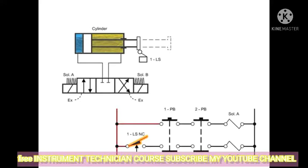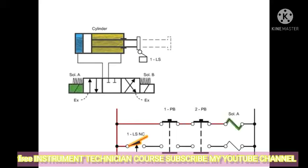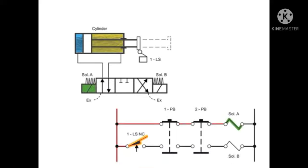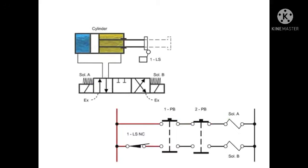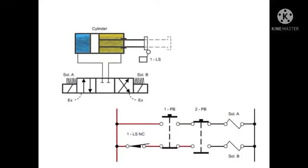Both buttons must be pressed to energize valve solenoid A and start the cylinder forward. When the cylinder begins to move forward, limit switch one is released and goes to its normally closed position. If either button is released, both solenoids de-energize and the springs return the valve to its neutral center position, stopping the movement of the cylinder.